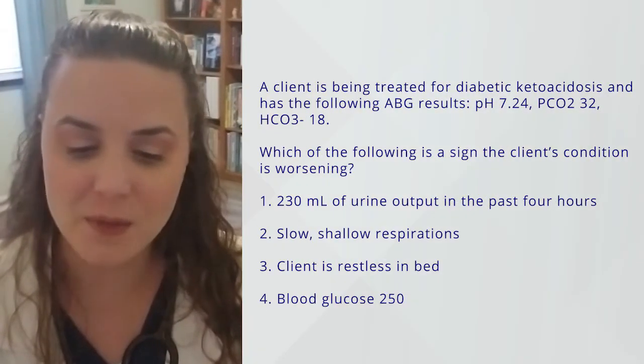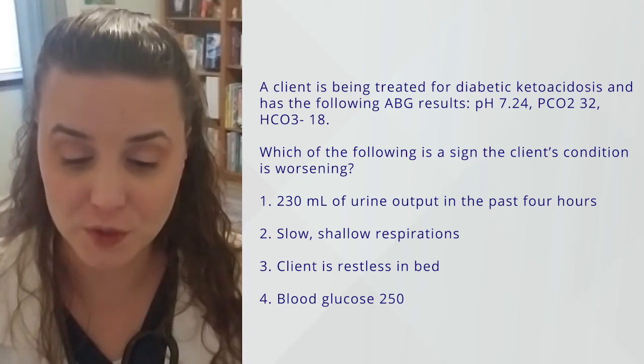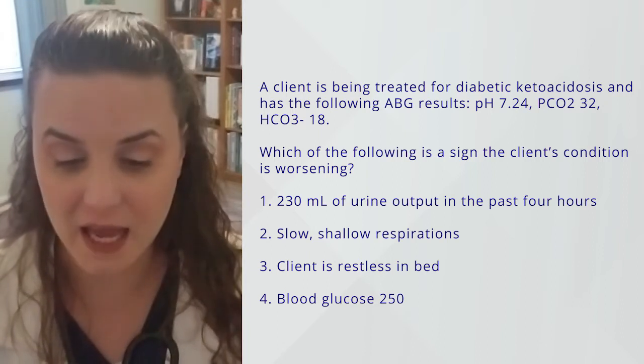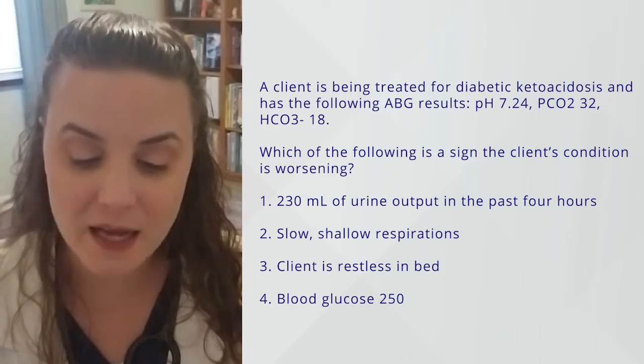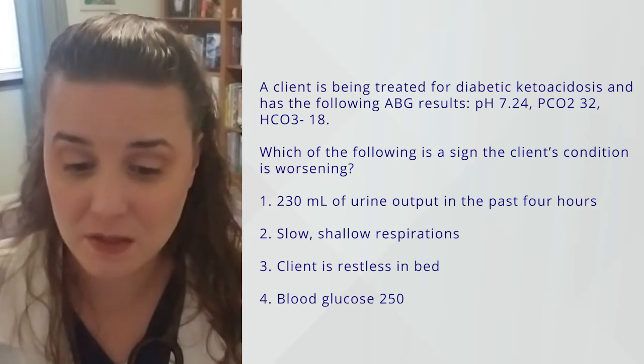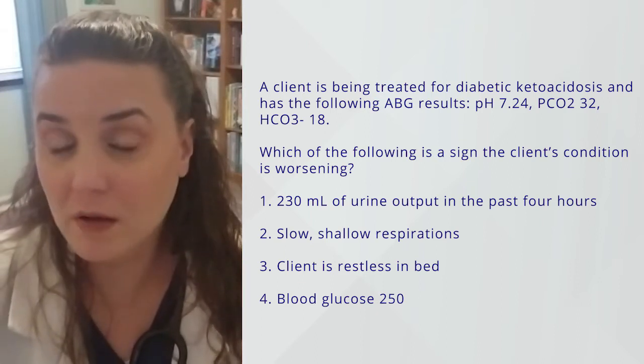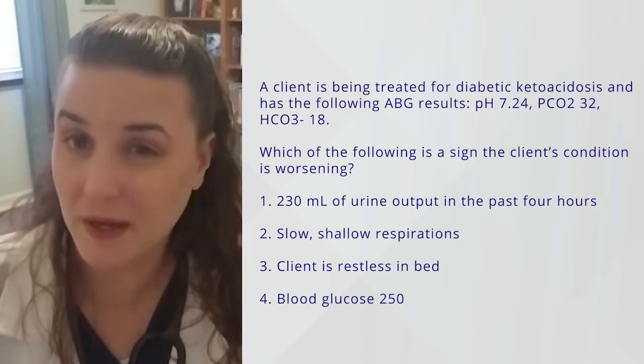Now let's put this into critical thinking and apply it to an NCLEX-style question. Remember, NCLEX is all about the textbook and critical thinking — that's exactly what Kaplan is going to help you with as you prepare. You have an ABG with a pH of 7.24, a PCO2 of 32, and a bicarb of 18. The client is being treated for DKA. Which of the following is a sign that the client's condition is worsening? So we have acidosis — notice that the bicarb is what's causing the acidosis, so it's a metabolic acidosis, and we know it's metabolic because the client is in diabetic ketoacidosis.